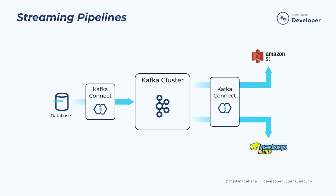Let's take a look at a few common use cases where Kafka Connect is used. Kafka Connect can be used to ingest real-time streams of events from a data source and stream it to a target system for analytics. In this particular example, our data source is a transactional database. We have a Kafka connector polling the database for updates and then translating that information into real-time events that it then produces to Kafka.